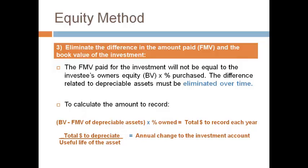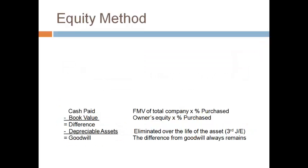This is much easier to understand with numbers, and we will work through an example in the next investment video. The investor pays more than book value because of goodwill not on the balance sheet and because the value of other assets differs from what's reported. The cash paid is the fair market value at the time of purchase and is the amount the investment account started with. The book value is what the investment account needs to be. Each asset identified is adjusted separately; however, there is no adjustment for goodwill, as there will always be a difference for goodwill.